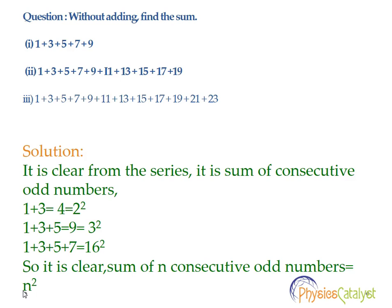If you add 1 plus 3, that is equal to 4, which is 2 square. So the sum of 2 consecutive odd numbers is 2 square. If you add 1 plus 3 plus 5, that is equal to 9, which is 3 square. And 1 plus 3 plus 5 plus 7 equals 16, which is 4 square. So it is very clear from these series that the sum of n consecutive odd numbers is equal to n square.